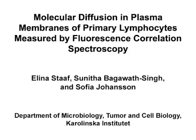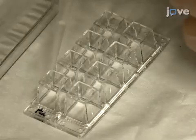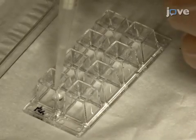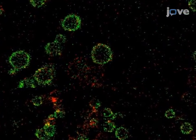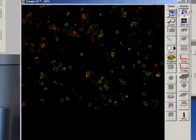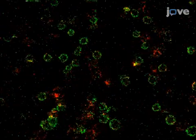The overall goal of this protocol is to measure the diffusion rate of a labeled protein in membranes of primary immune cells using fluorescence correlation spectroscopy. This method can help identify key questions in the immunology and cell biology fields, such as identifying natural killer cells with a more active membrane receptor dynamics. The main advantage of this technique is that it is used with live cells, so it accurately reflects the natural state on how molecules move.